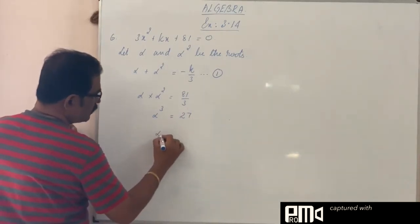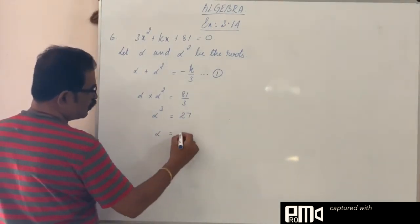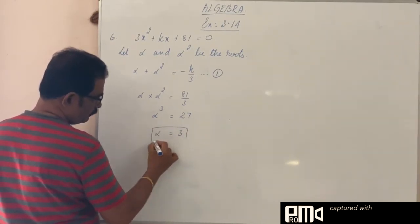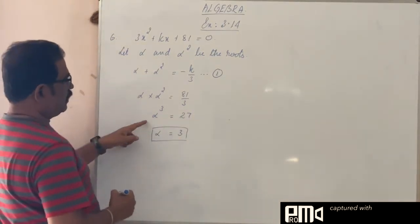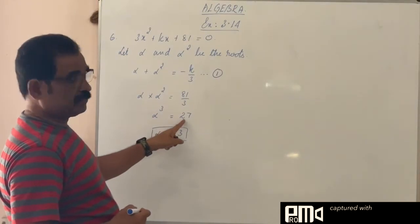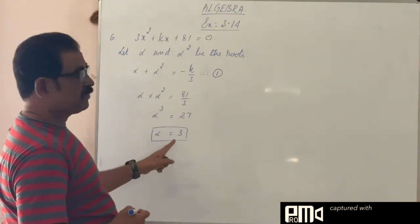So alpha is cube root of 27. Cube root of 27 is 3, alpha is 3. Alpha cube is 27, this is 3 cube, right. Alpha cube is 3 cube, so alpha is 3.